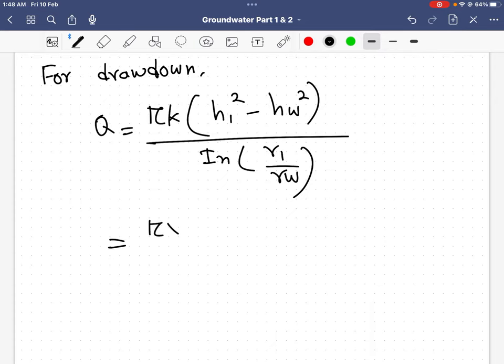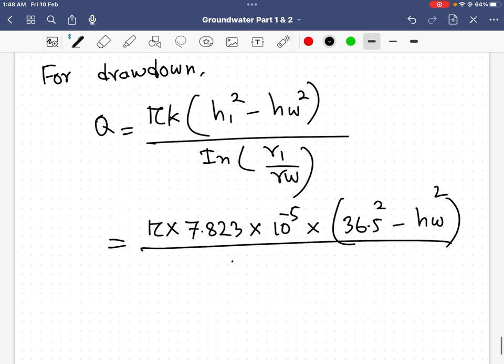Q equals pi K times (h1 squared minus hw squared) divided by ln(r1 divided by rw). From this formula, I have K from the previous solution. I know my h1 is 36.5 squared minus hw squared. I know r1 is 25.